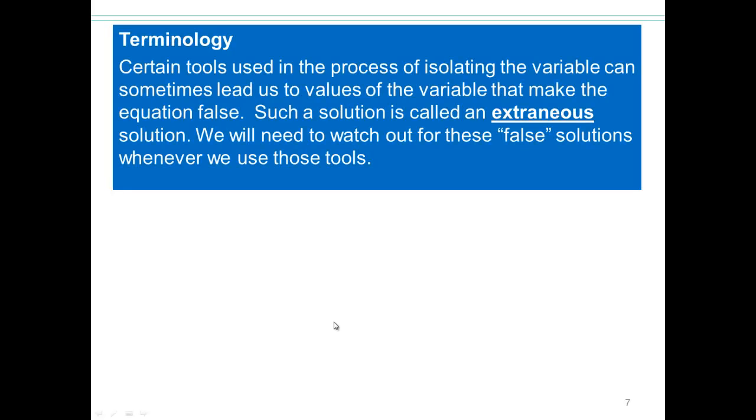Certain tools that we'll be using for isolating the variable can sometimes lead to values of the variable that make the equation false. This mostly happens when you undo square roots or if you undo denominators. Alright, so for example, let's consider x equals 4 as my original equation.